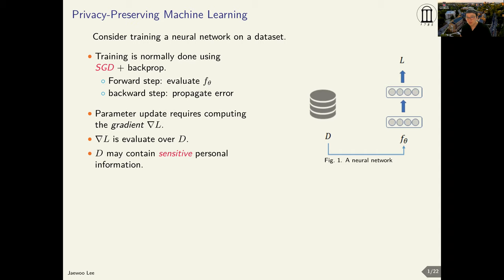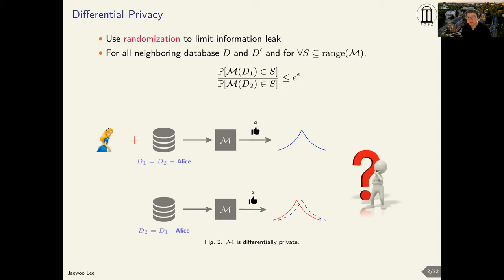In this work, we assume our input dataset D contains some sensitive information, for example medical records or insurance claims. The specific notion of privacy that we will be using in this project is differential privacy.